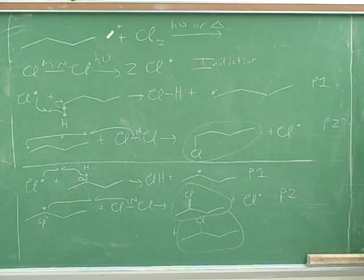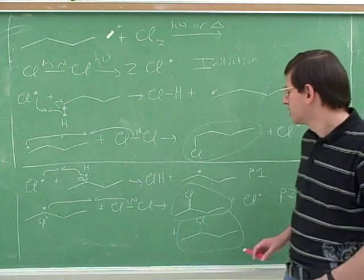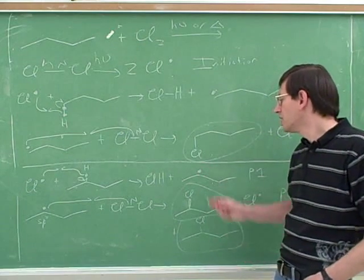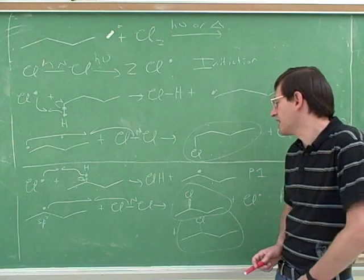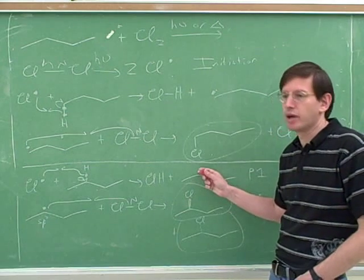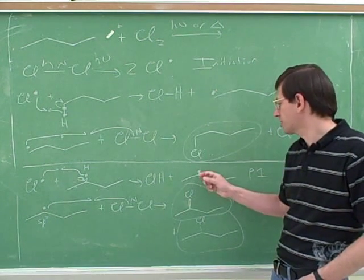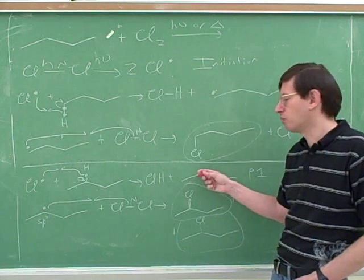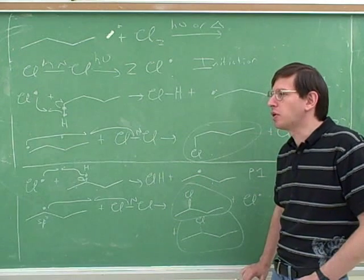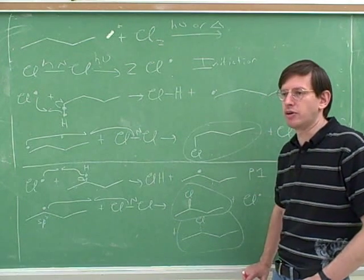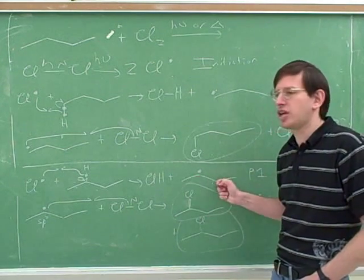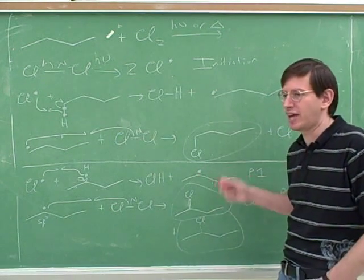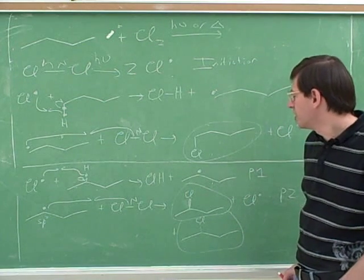The instructor explains: a radical is electron poor because it has only one electron where it wants a pair. Even though it doesn't have a positive charge, it has an unpaired electron and wants to acquire a paired electron — so it is electron poor and wants to be surrounded by electron donors. Carbon chains and alkyl groups are electron donors; we just memorize that.